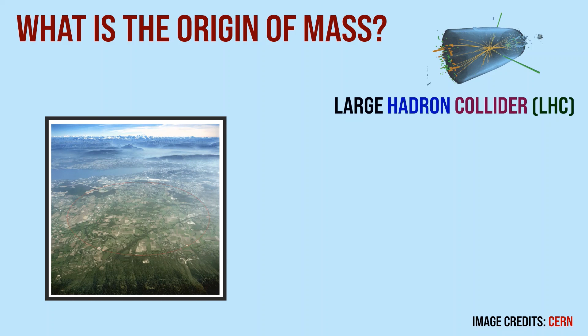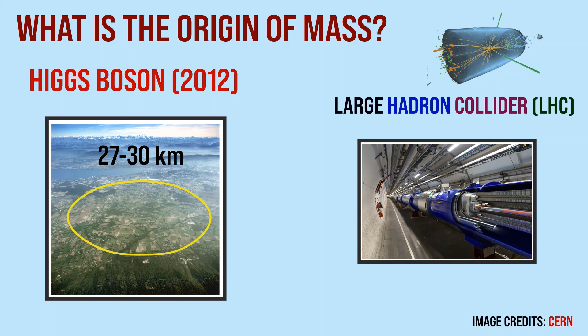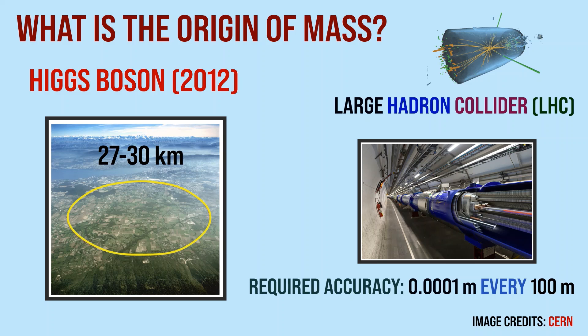The Large Hadron Collider particle accelerator, which confirmed the existence of the Higgs boson in 2012, is installed in 30 kilometers of underground tunnels. To make it work, the steering magnets must be placed to an accuracy of one-tenth of a millimeter every 100 meters.